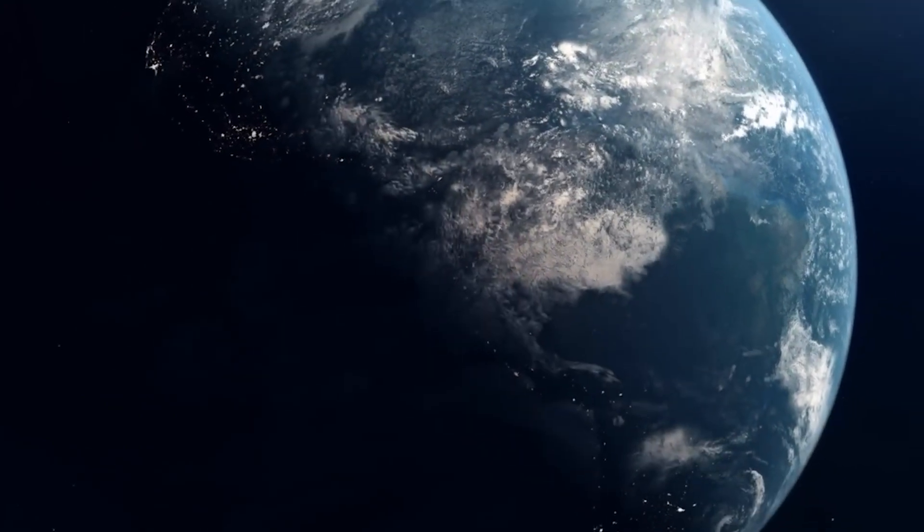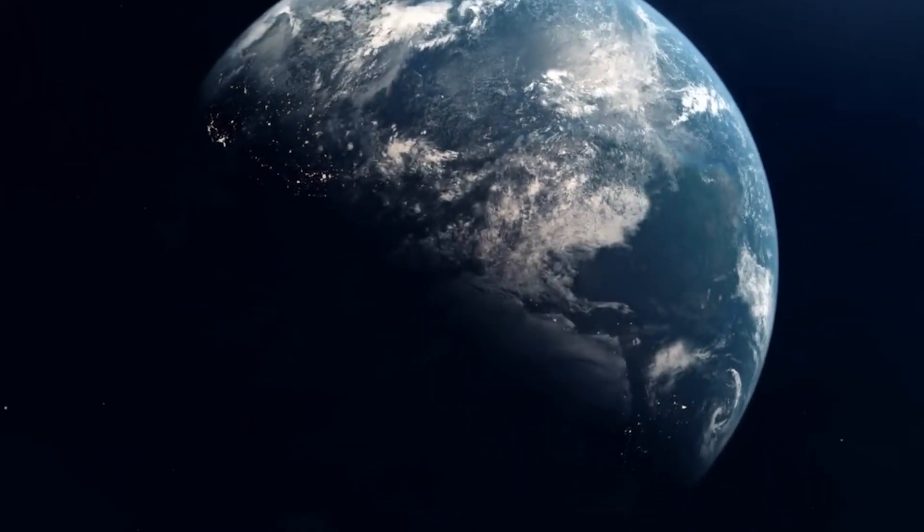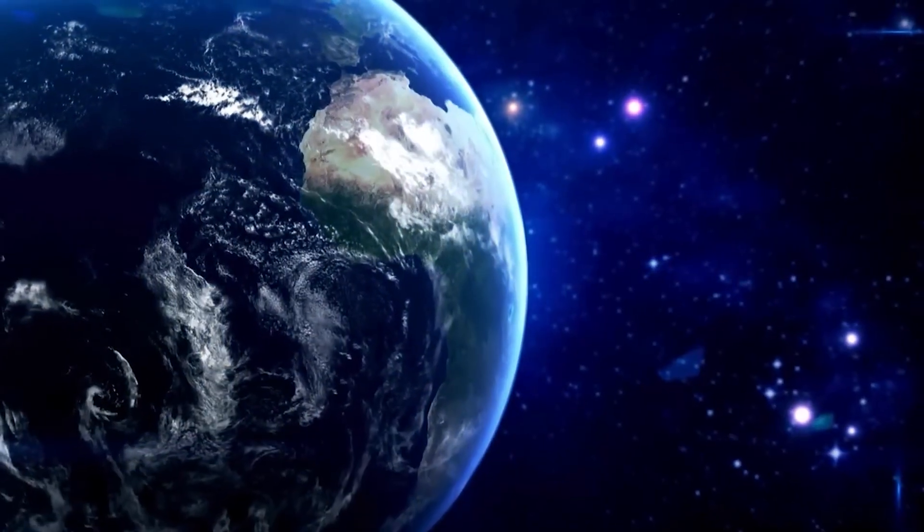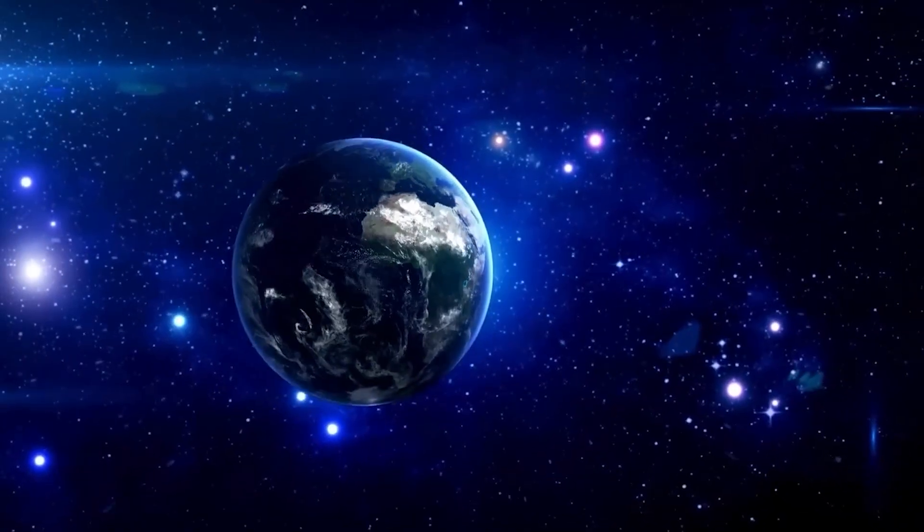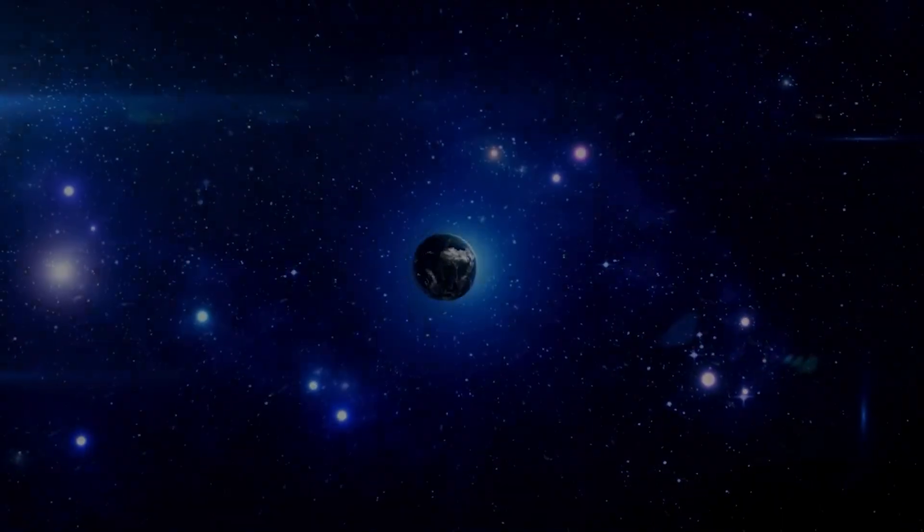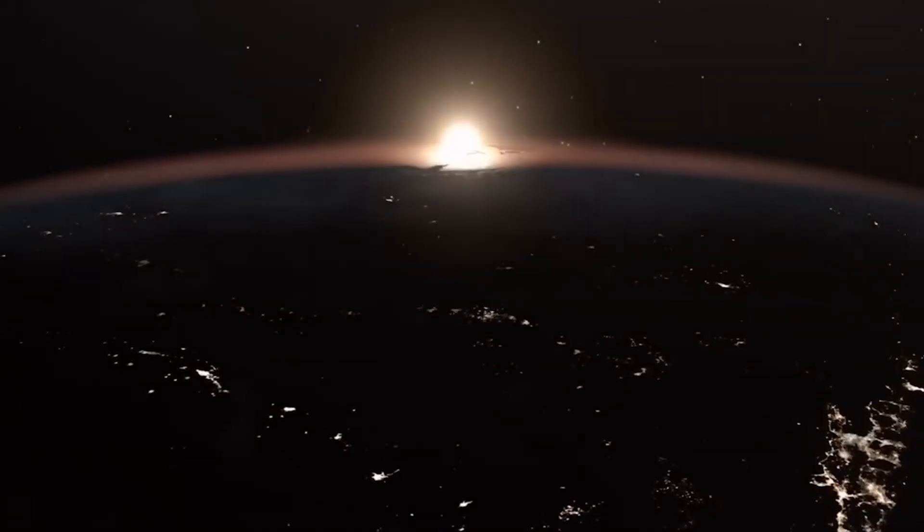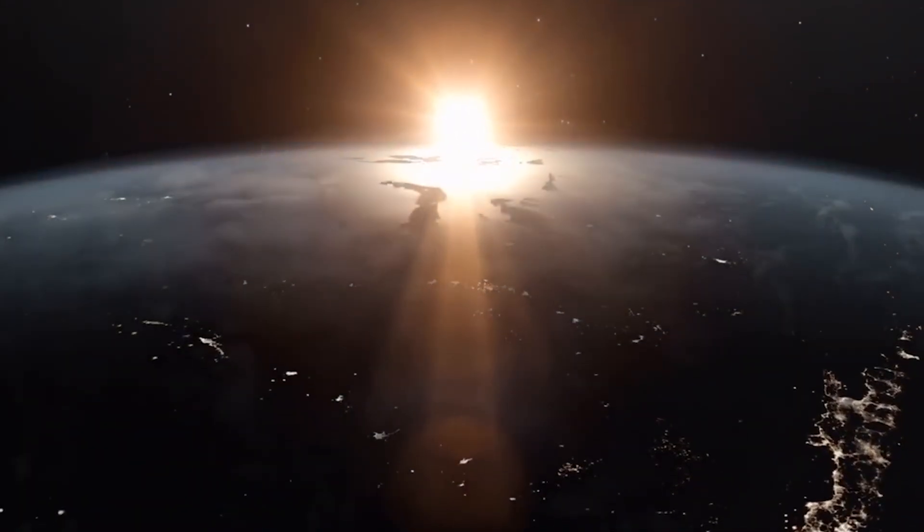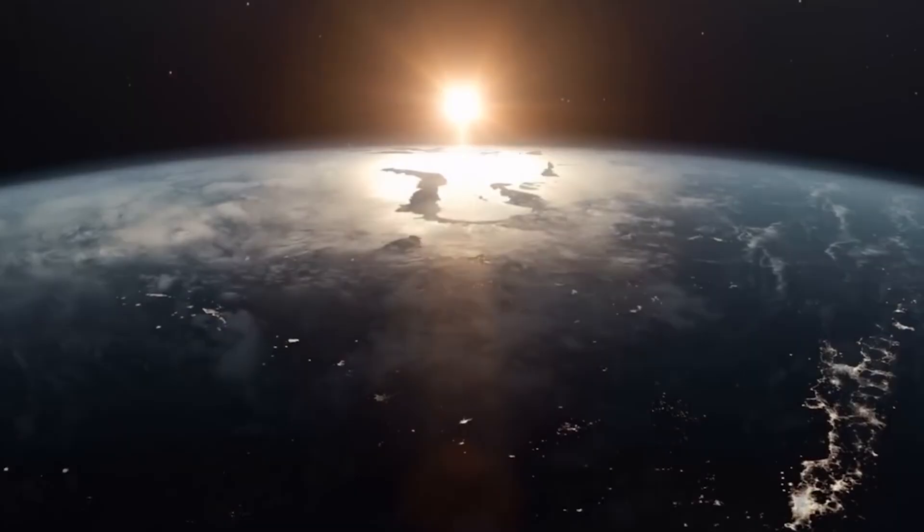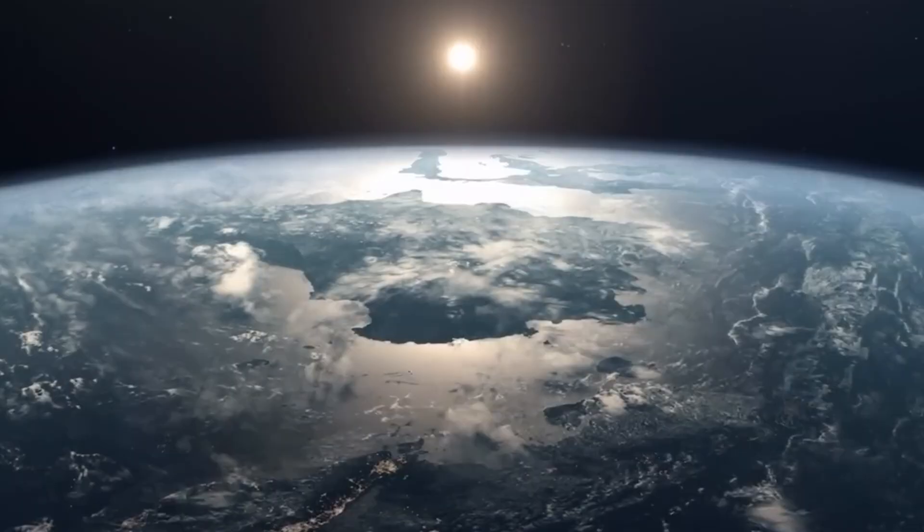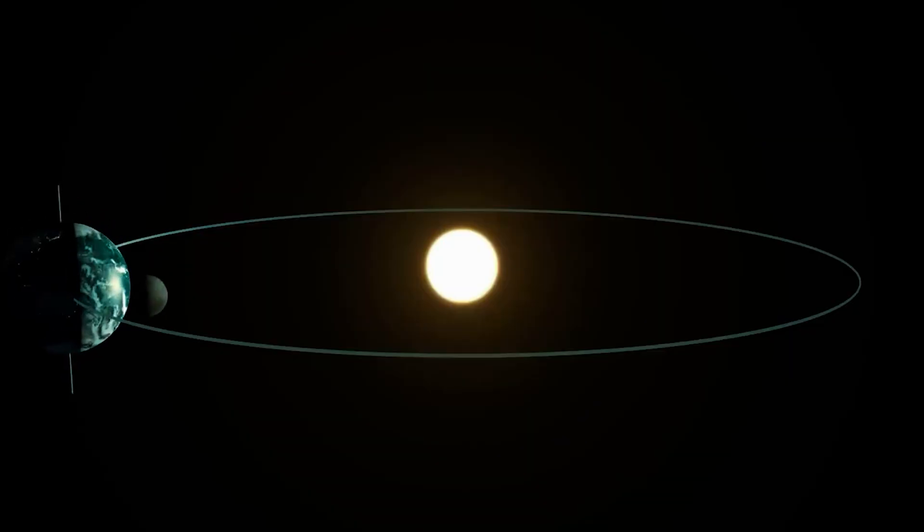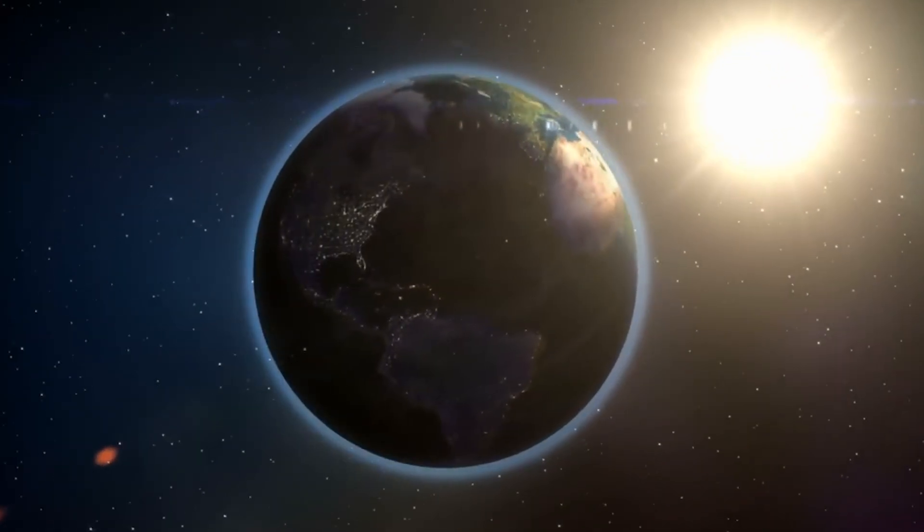First, our planet graciously revolves around the Sun, completing one orbit each year. This rotation, driven by the Sun's gravitational force, is fundamental for life on Earth, creating, for example, the cycles of day and night. The solar system, in turn, also moves through space, traveling a spiral path through the Milky Way, our home galaxy. This journey happens at a dizzying speed of about 220 kilometers per second, driven by the powerful gravitational pull of neighboring stars, giant gas clouds, and the mysterious dark matter that fills our galaxy.